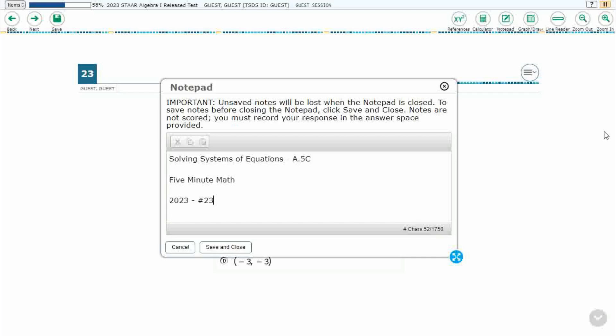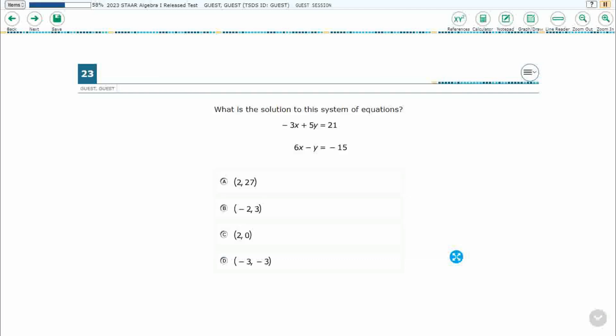Hello, and welcome to 5-Minute Math. Today we are looking at the Algebra 1 concept of Solving Systems of Equations. This is standard A.5C in the great state of Texas. We are using item number 23 of the 2023 released STAR test.